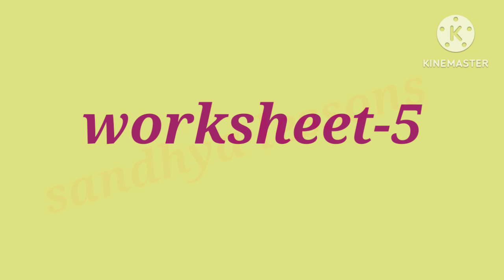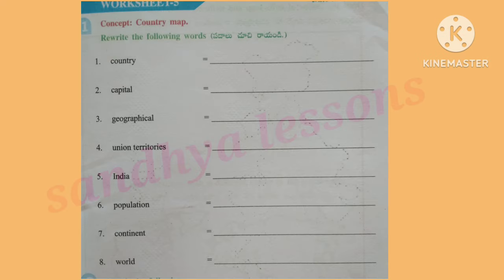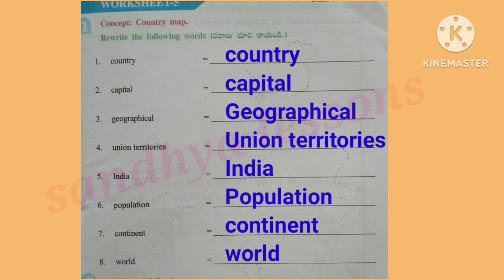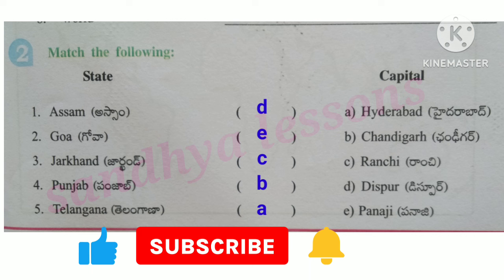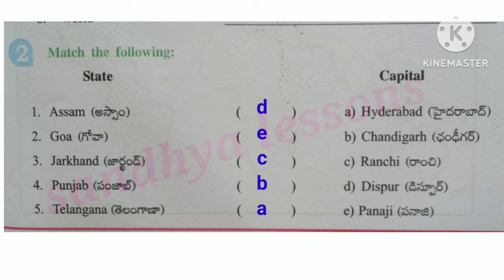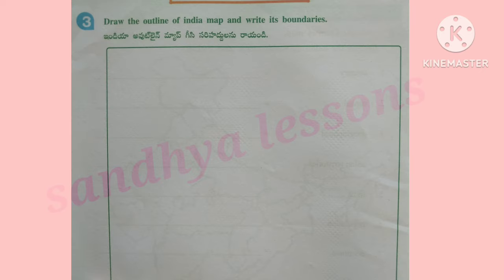Worksheet 5, Question 1: Rewrite the following words — Country, Capital, Geographical, Union Territories, India, Population, Continent, World. Question 2: Match the following — Assam: Dispur, Goa: Panaji, Jharkhand: Ranchi, Punjab: Chandigarh, Telangana: Hyderabad. Question 3: Draw the outline of India map and write its boundaries.